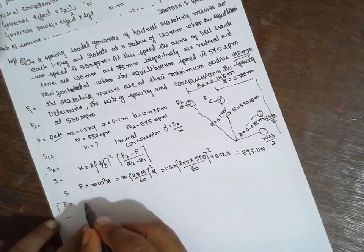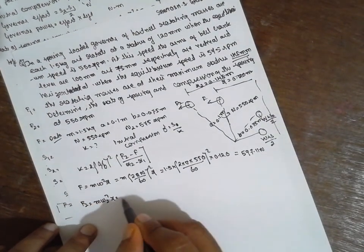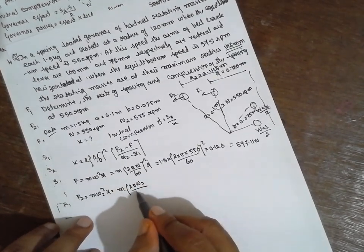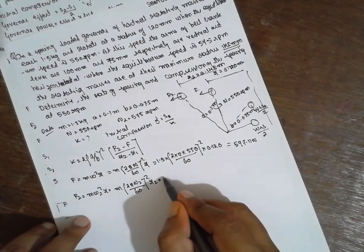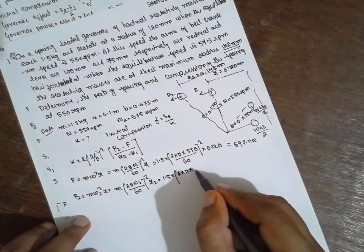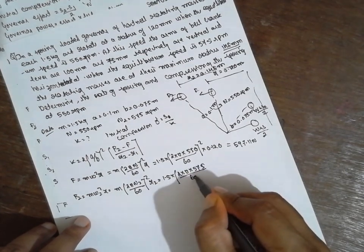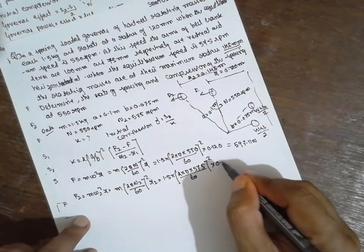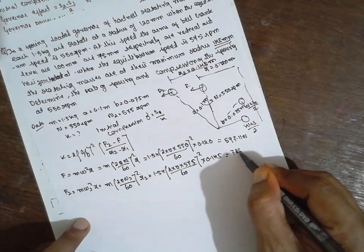Next, I will calculate F2. F2 is equal to M·ω2²·R2, which is 1.5 into (2π into 574 divided by 60) whole squared into R2. R2 is 0.145 meter. The answer for F2 is 788.6 N.